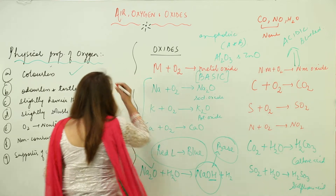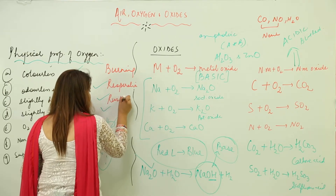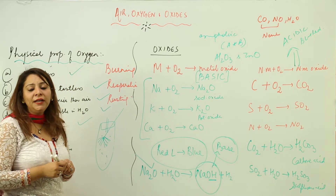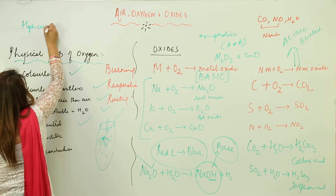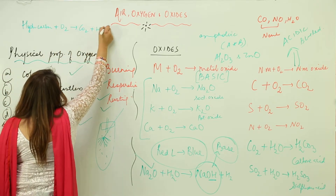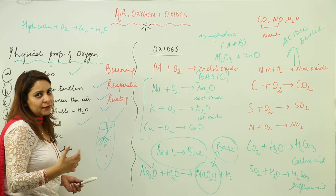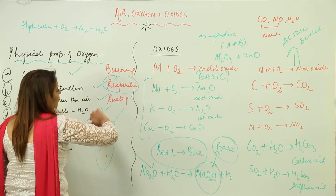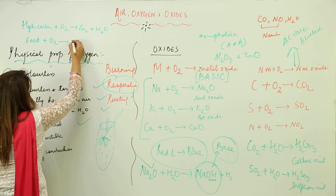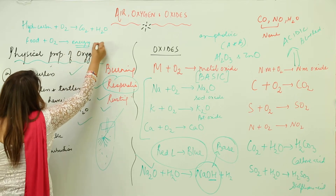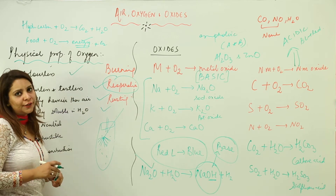Oxides are involved in processes like burning, respiration, and rusting. In burning, for example, when you burn a hydrocarbon — which consists of carbon and hydrogen — you get CO2 and water vapor. This is called oxidation. In respiration, food gets oxidized in the presence of oxygen, giving rise to energy and CO2, allowing you to perform many activities of the body.